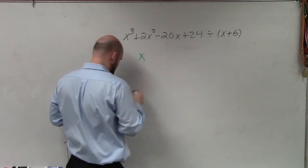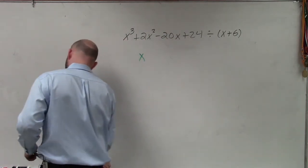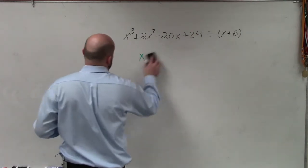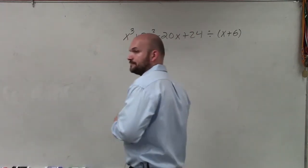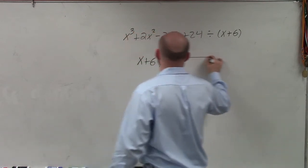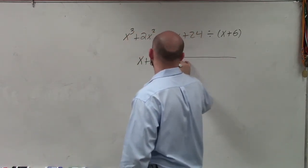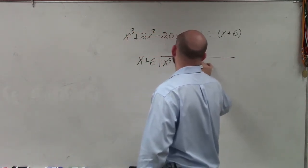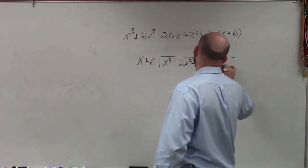So I'll write x plus 6 raised to x cubed plus 2x squared minus 20x plus 24.